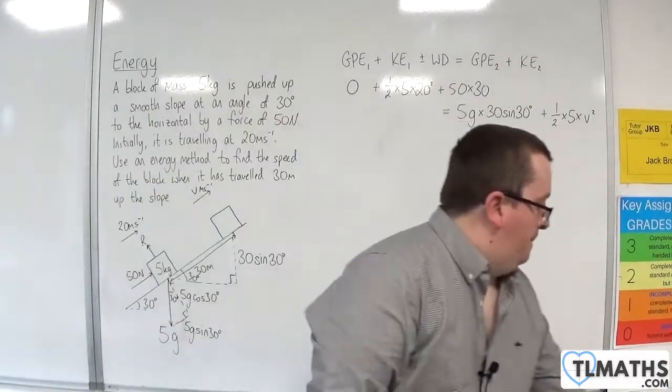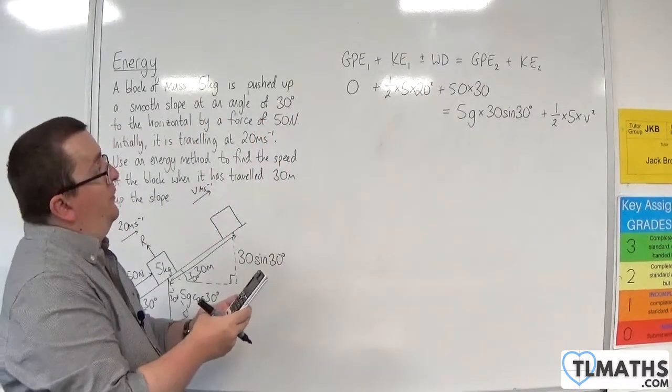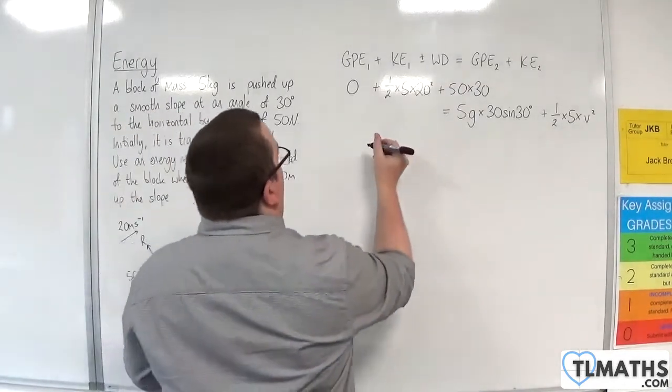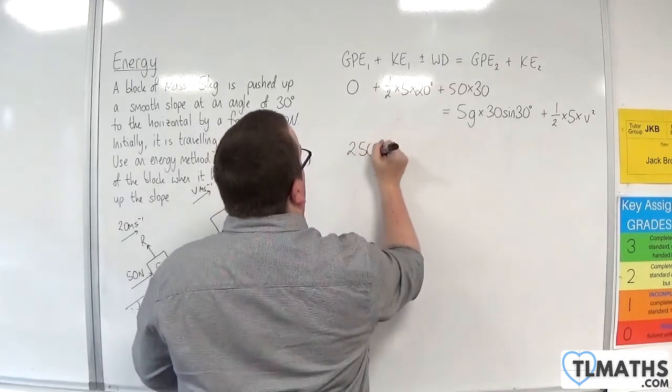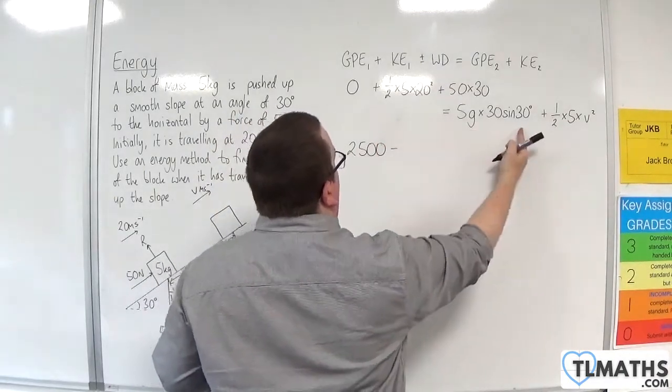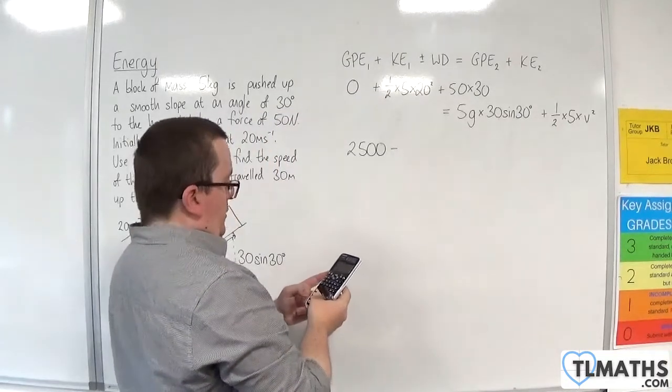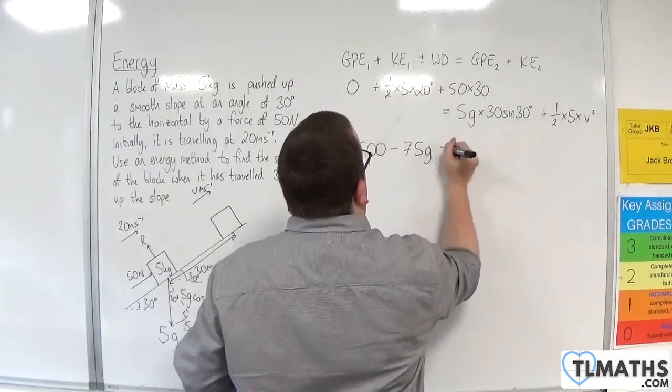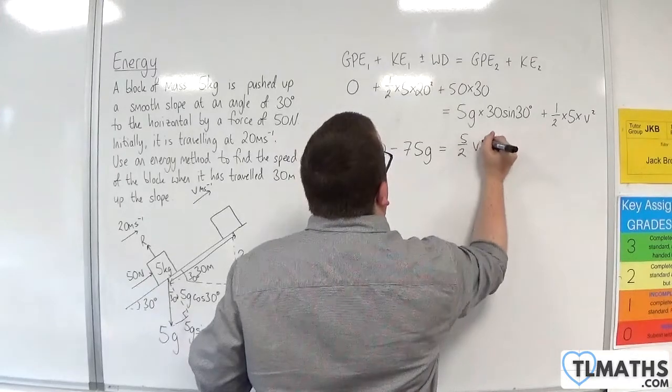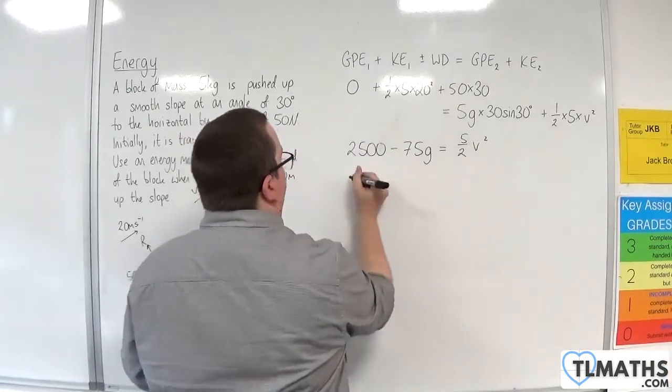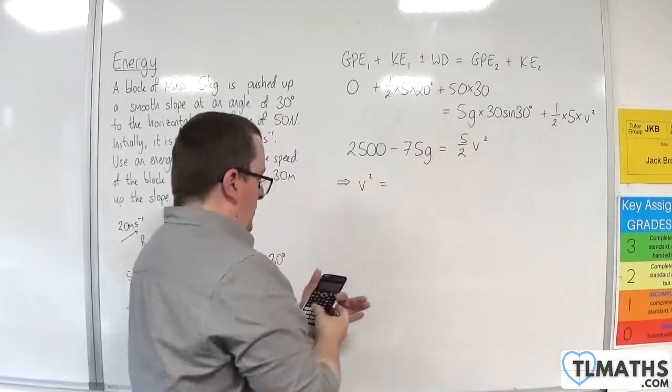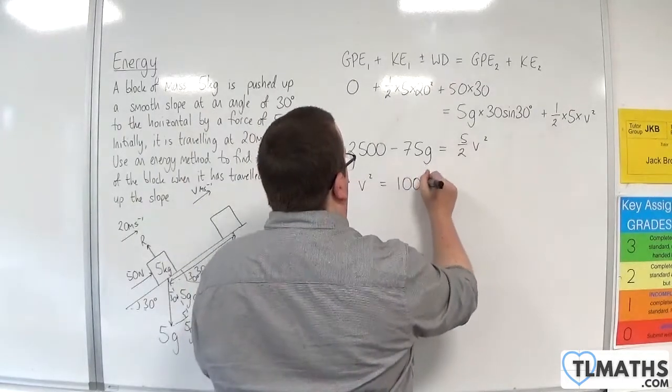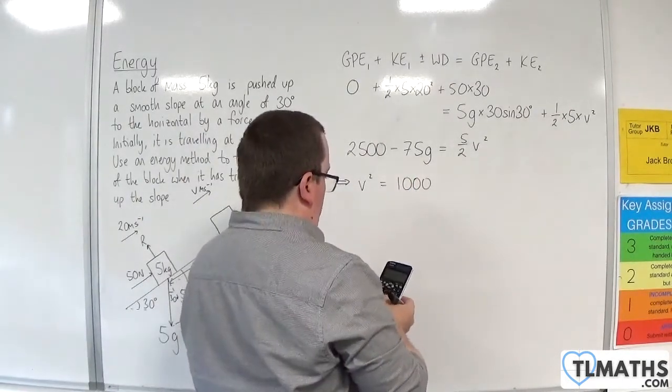We've got 1/2 times 5 times 20 squared plus 50 times 30 is 2,500. Take away this, 5 times 30 times sine of 30 is 75. So 75G is equal to 5 halves V squared. So 2,500 divided by 5 halves is 1,000, and 75 divided by 5 halves is 30.